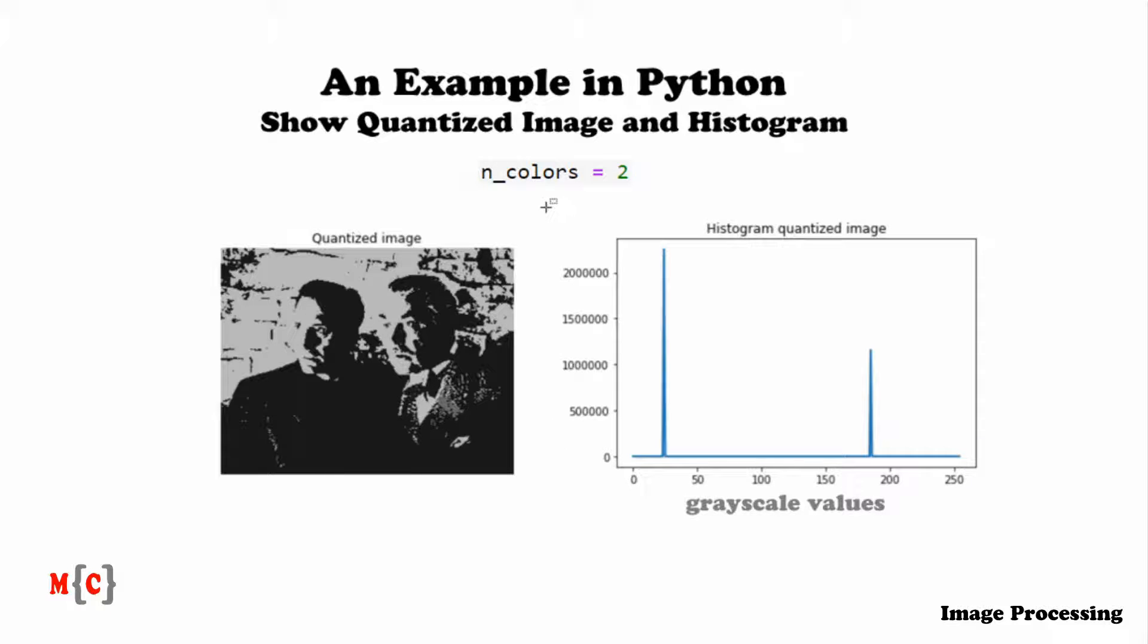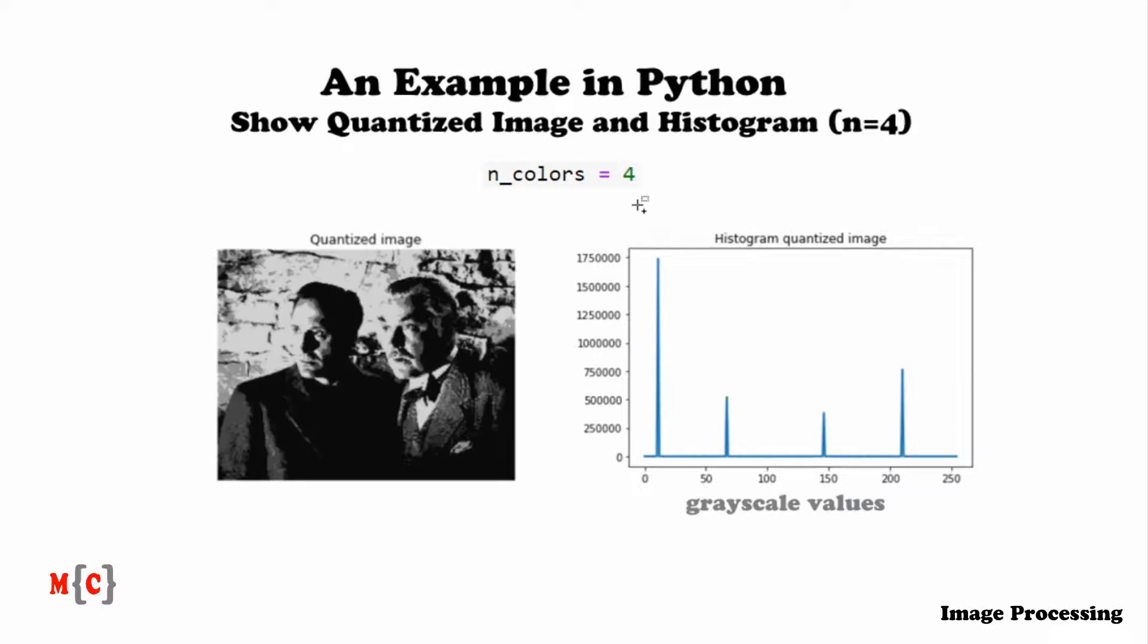Now, of course, we predefined the number of colors to equal two. We can also assign any other value, of course. Now let's assign four, for example. Now, we end up with the following quantized image, which is a lot more detail. And in the histogram, we see indeed that there are four peaks that correspond to these grayscale values.